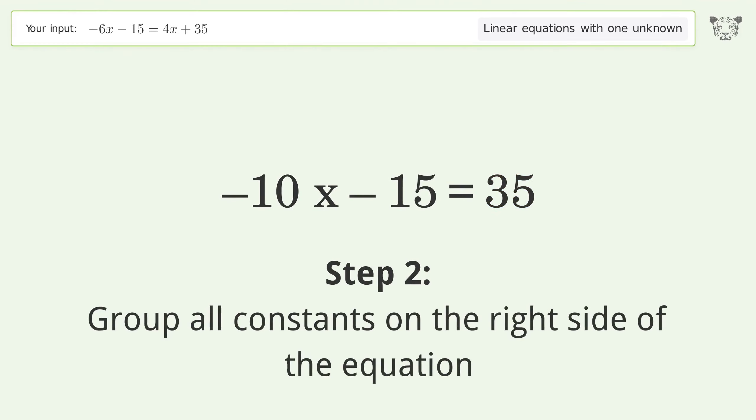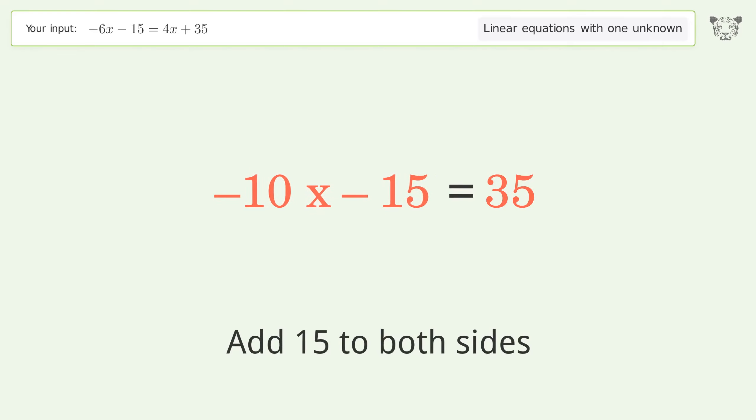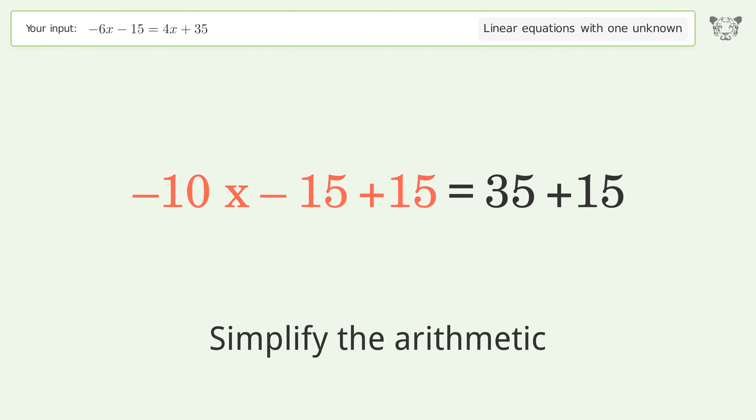Group all constants on the right side of the equation. Add 15 to both sides. Simplify the arithmetic.